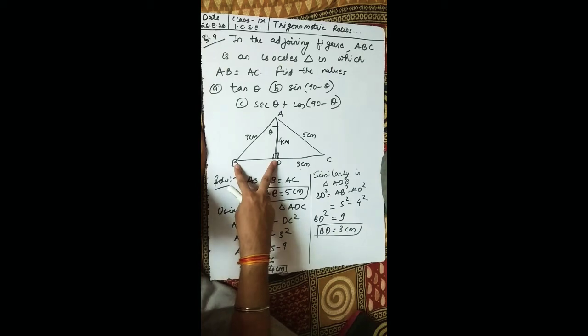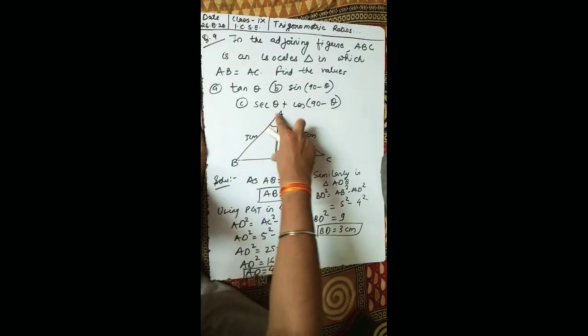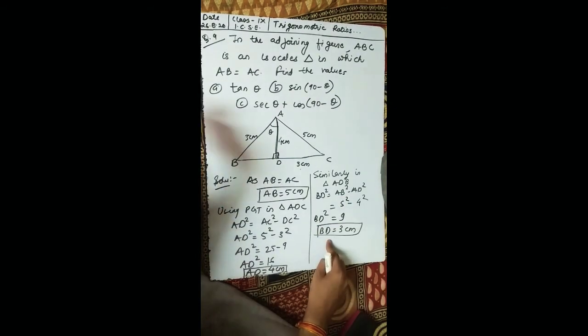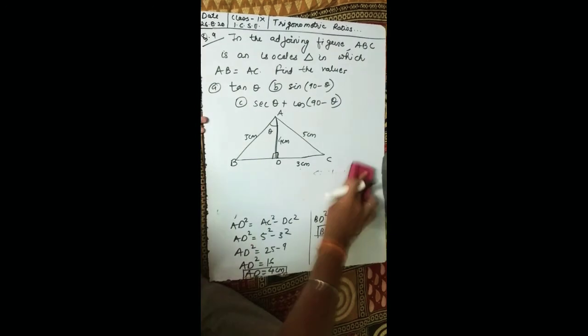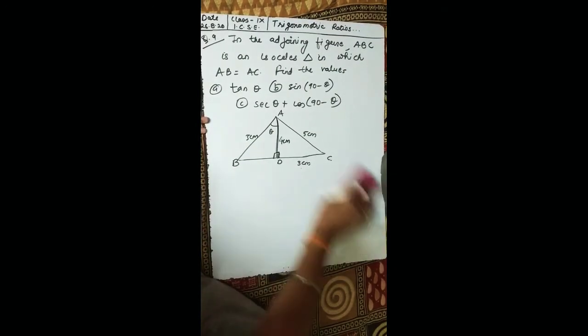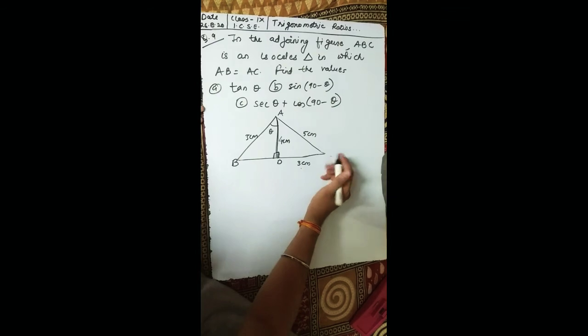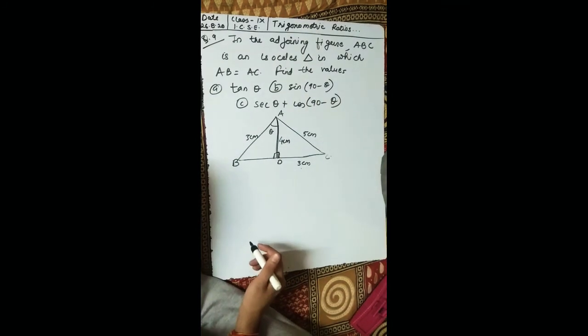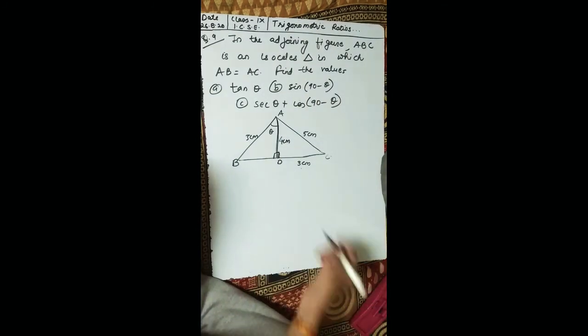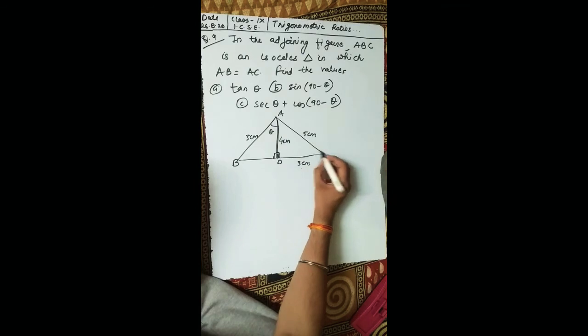Similarly, since we don't have the base in the other triangle, base squared equals hypotenuse squared minus perpendicular squared, giving BD equals 3 centimeters. Now in the question there is an angle labeled 90 minus theta, which creates some complexity. Let's find what 90 minus theta actually represents.